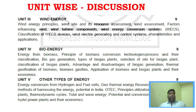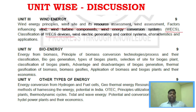Unit 3 is simpler compared to Unit 2. It focuses on wind energy — what components and devices are used, the principles of wind energy, resource assessment, and the classification of WECS (Wind Energy Conversion Systems) devices, which is a definite exam question and a key area in Unit 3.